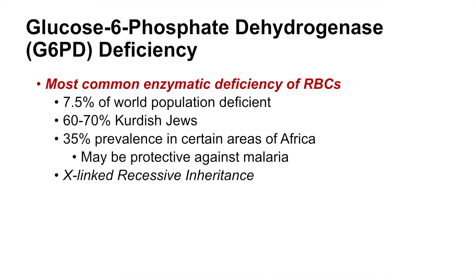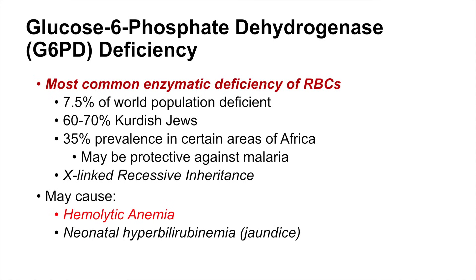This condition is inherited in an X-linked recessive fashion. Individuals with deficiency in glucose-6-phosphate dehydrogenase may experience hemolytic anemia.